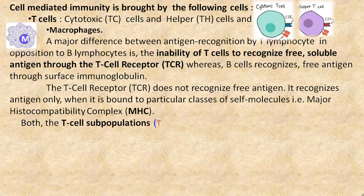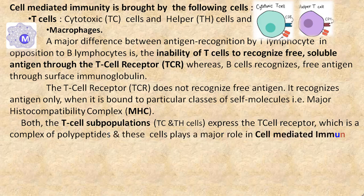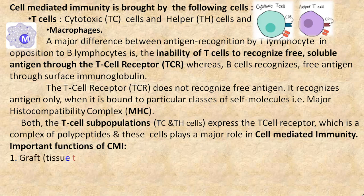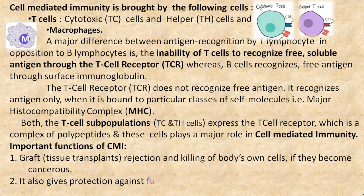Both T cell subpopulations, that is cytotoxic T cells and helper cells, express the T cell receptor, which is a complex of polypeptides, and these cells play a major role in cell-mediated immunity. The important functions of cell-mediated immunity are graft rejection, that is tissue transplant rejection, killing of the body's own cells if they become cancerous, and it also gives protection against fungi and protozoa.